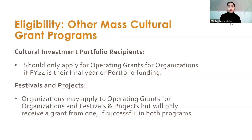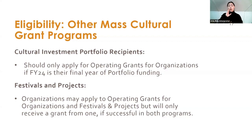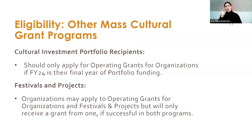For an organization that has 990s for 2022 and 2023 but operated previously as an unincorporated group via fiscal agent — you will not be eligible in this first round, but next year when you have three years of 990s you will be eligible if you meet the minimum requirements. For organizations with a fiscal sponsor functioning as a 501(c)(3) — the organization must have its own incorporation and its own 501(c)(3) status to be eligible.